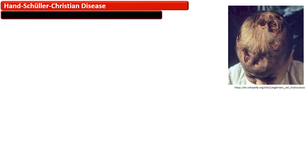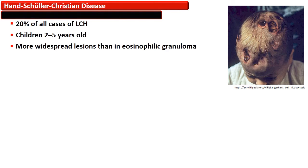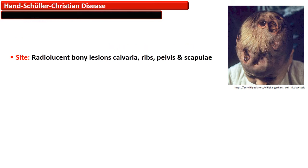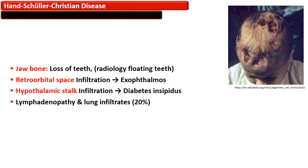Hand-Schüller-Christian disease is a multifocal disease accounting for 20% of all cases of Langerhans cell histiocytosis. It affects a younger age group, typically 2 to 5 years of age. It is a more widespread lesion than eosinophilic granuloma. The sites usually involved are the calvaria, ribs, pelvis, and scapulae, with radiolucent lytic lesions in the bone.